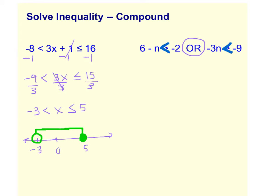So first, undo any addition or subtraction. So we're going to subtract 6. And our 6 is cancel. We bring down a negative N is less than negative 8.